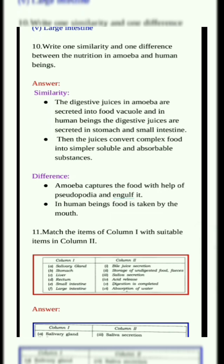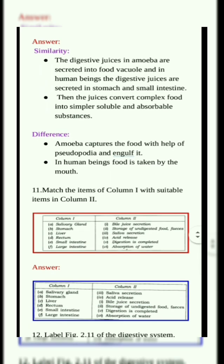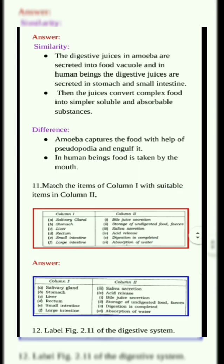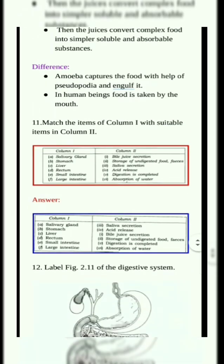Eleventh question. Match the items of column one with suitable items in column two. Answers: Salivary gland — Saliva secretion. Stomach — Acid release. Liver — Bile juice secretion. Rectum — Storage of undigested food/feces. Small intestine — Digestion is completed. Large intestine — Absorption of water.